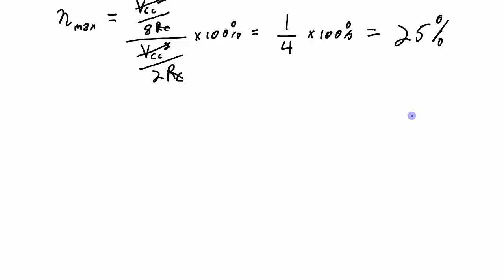That's the maximum. A real circuit will have something that's less than 25%. So I've shown you a little bit about class A BJT amplifiers. Hope you learned something, and I will see you in the next video. Thanks for watching.